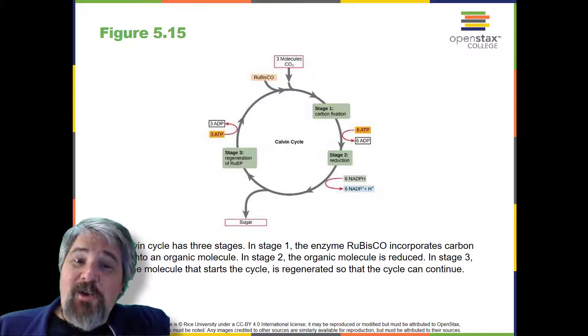Because the carbohydrate molecule has six carbon atoms, it takes six turns of the Calvin cycle to make one carbohydrate molecule, one for each carbon dioxide molecule fixed.